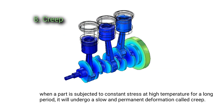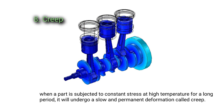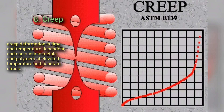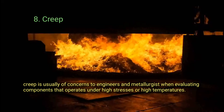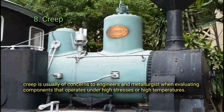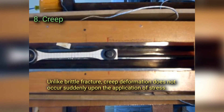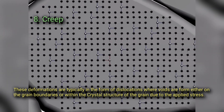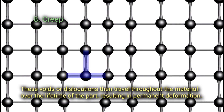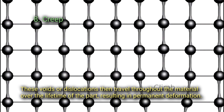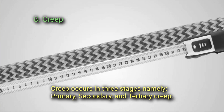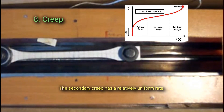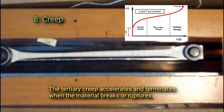8. Creep. When a part is subjected to constant stress at high temperature for a long period, it will undergo a slow and permanent deformation called creep. Creep deformation is time and temperature dependent and can occur in metals and polymers at elevated temperatures and constant stress. Creep is usually of concern to engineers and metallurgists when evaluating components that operate under high stresses or high temperatures. Unlike brittle fracture, creep deformation does not occur suddenly upon the application of stress. These deformations are typically in the form of dislocations where voids are formed either on the grain boundaries or within the crystal structure of the grain due to the applied stress. These voids or dislocations then travel throughout the material over the lifetime of the part, resulting in permanent deformation. Creep occurs in three stages: primary, secondary, and tertiary. Primary creep starts at a rapid rate and slows with time. Secondary creep has a relatively uniform rate, while tertiary creep accelerates and terminates when the material breaks or ruptures.